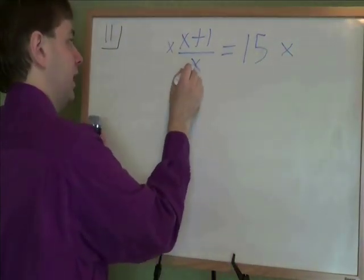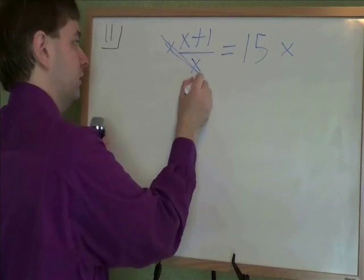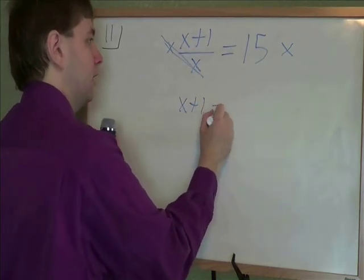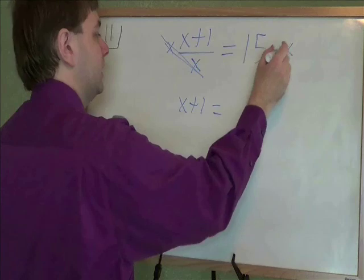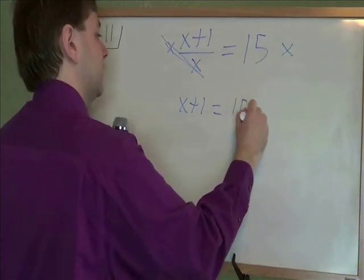That way, x and divide by x cancel each other out, go away completely, and on the other side we just multiply 15 times x. That's 15x.